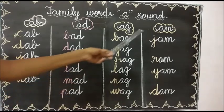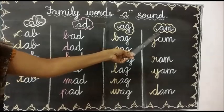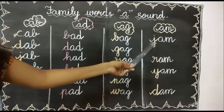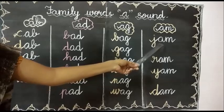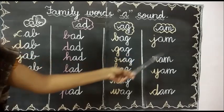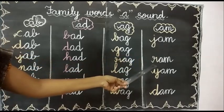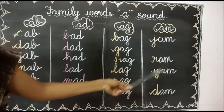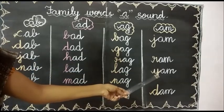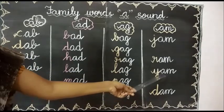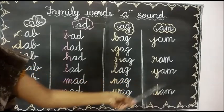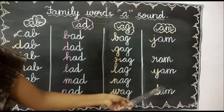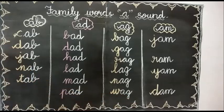Next, AM words. A, M — am. What is the first one? Jam. J, A, M — jam. Next one: ram. R, A, M — ram. Next one: yam. Y, A, M — yam. Next one: dam. D, A, M — dam. Thank you.